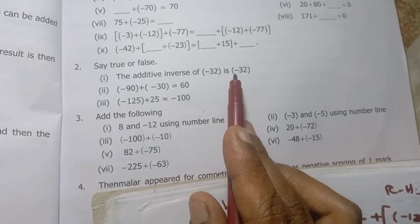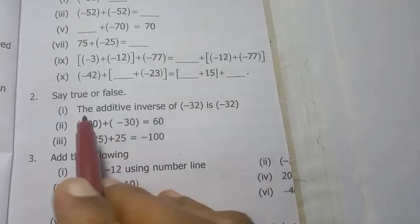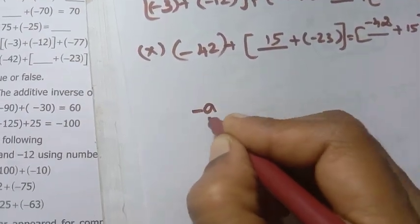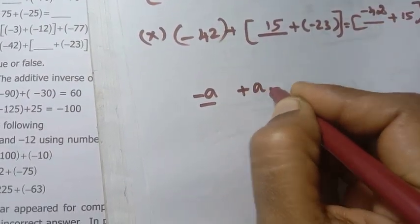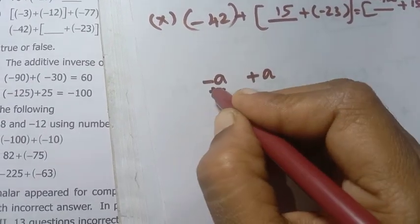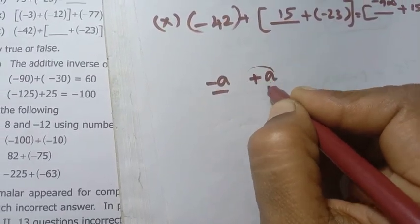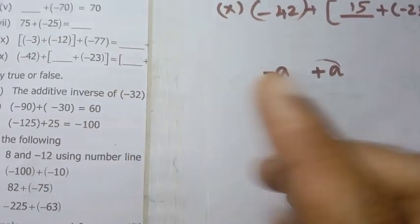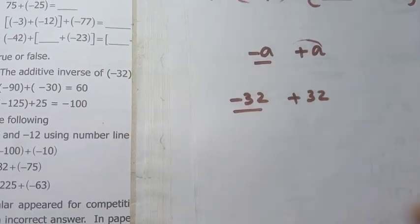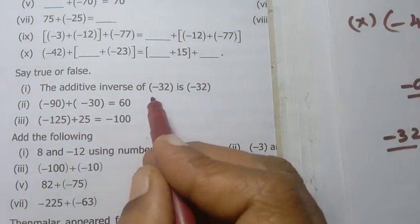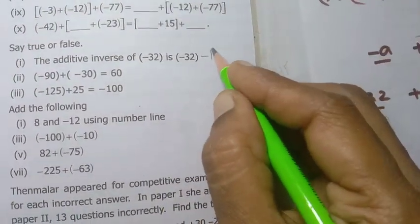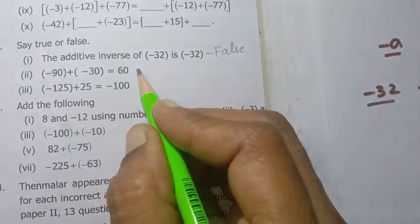Next is true or false. First one: the additive inverse of minus 32 is minus 32. Now, additive inverse of minus a is plus a. So the additive inverse of minus 32 is plus 32, not minus 32. So this statement is false.